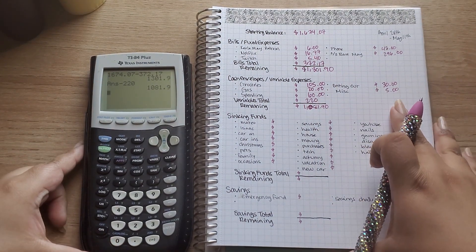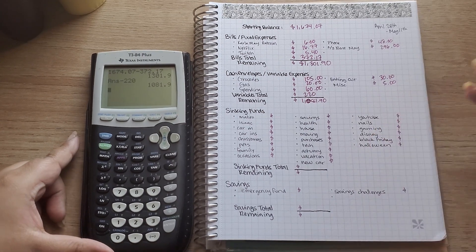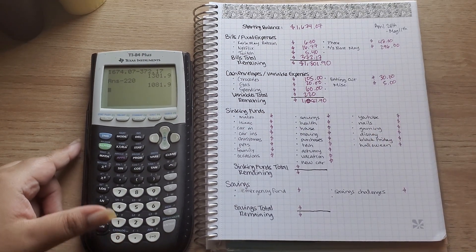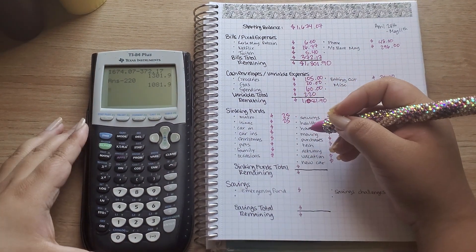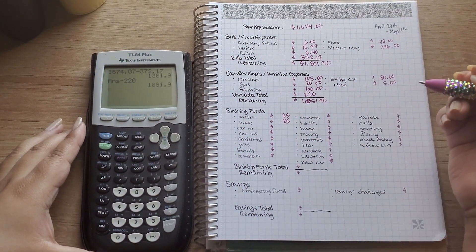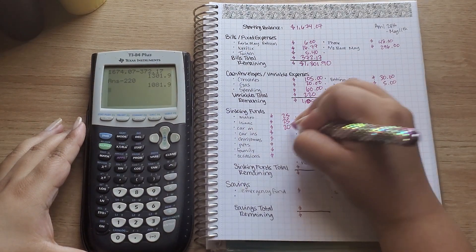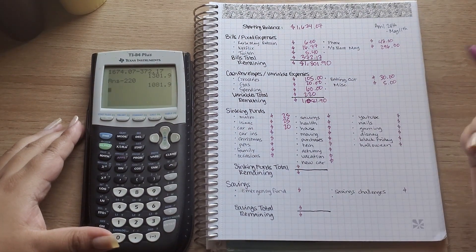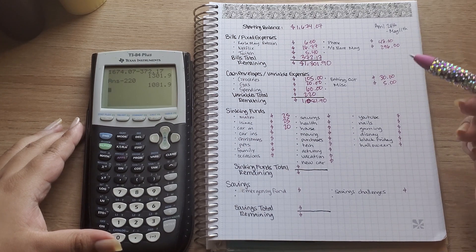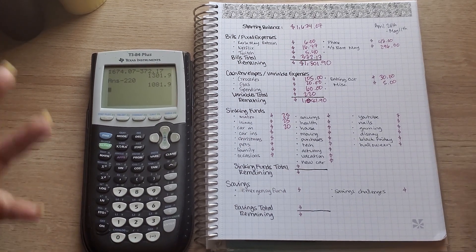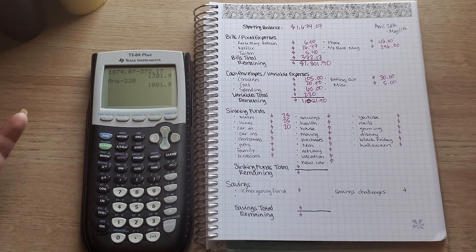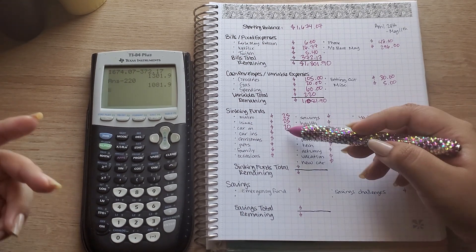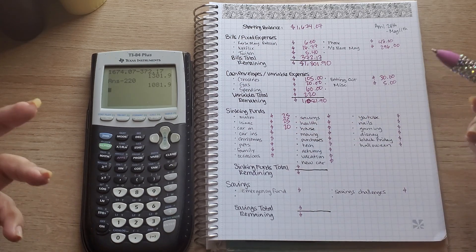And now on to my sinking funds. So some of these won't change and some of these are a little bit higher than others. So Mateo and Isaac are both going to get $25. My car maintenance is just going to get $20. I reached my goal of $1,000 to my car maintenance fund. My next goal is $2,000, so now I just need to save another thousand and hopefully my car doesn't need anything in the next few months while I try and fund this to $2,000.